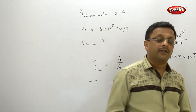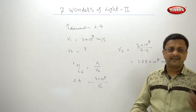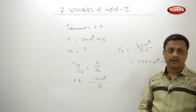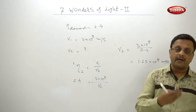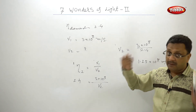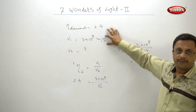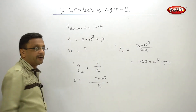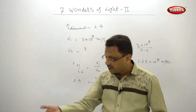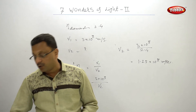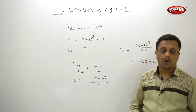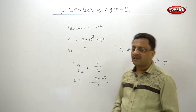Have you understood this problem? It is very easy. Either they will give two velocities and ask you to find the refractive index, or they will give the refractive index of one material and ask for speed. If they say absolute refractive index, that means it is with respect to air or vacuum, and you know the speed of light in air. If it is not given, you should know that the velocity of light in vacuum or air is 3 × 10⁸ meters per second.